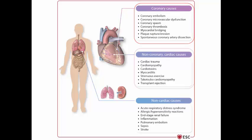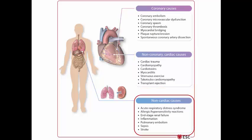Non-coronary but cardiac causes include cardiac trauma, cardiomyopathy, cardiotoxins like chemotherapy, myocarditis, strenuous exercise, Takotsubo cardiomyopathy — a famous cause of MINOCA — and transplant rejection. Non-cardiac causes outside the cardiovascular system include acute respiratory distress syndrome in pneumonia, allergy, end-stage renal disease, inflammatory disease, pulmonary embolism, sepsis, and stroke.